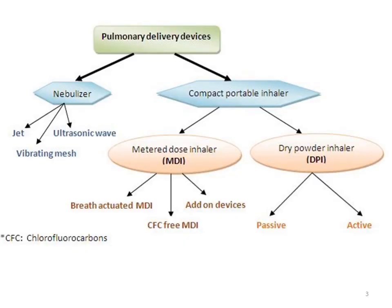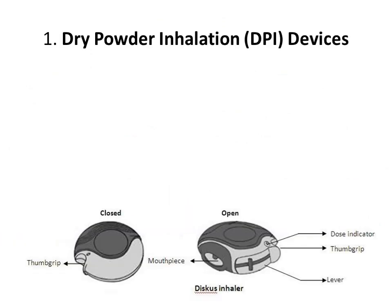Pulmonary drug delivery devices may be categorized broadly into two types: number one is nebulizers, and number two is compact portable inhalers. Compact portable inhalers are of two types — DPI and MDI. DPI may be active DPI or passive DPI. Metered dose inhalers may be breathe-actuated MDI, CFC-free MDI, or add-on devices. Nebulizers may be jet nebulizers, vibrating mesh nebulizers, or ultrasonic wave nebulizers.